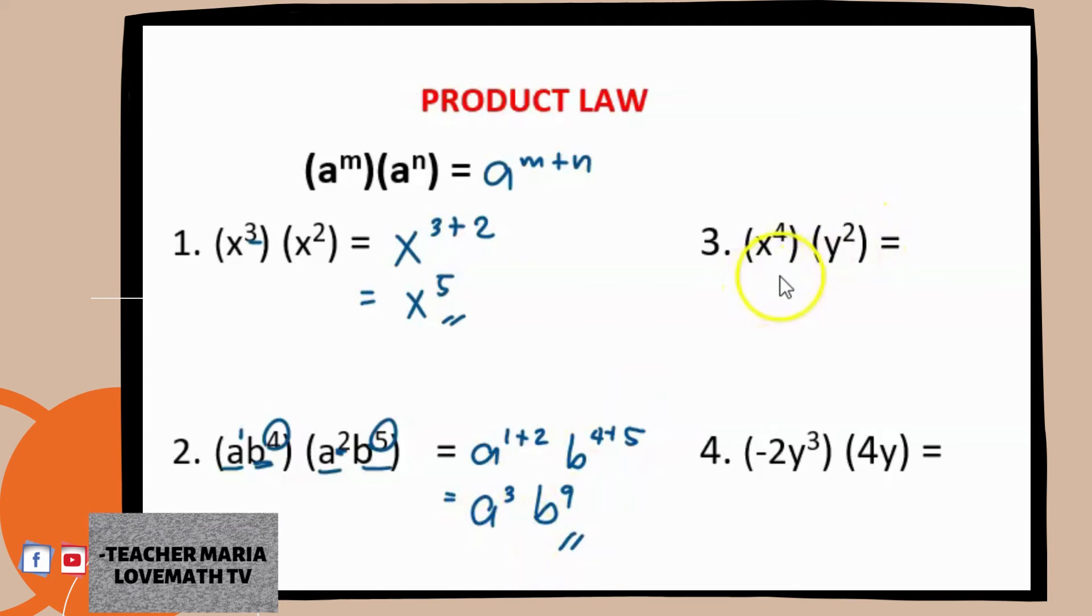Now how about this one, number 3? We have x raised to 4 multiplied by y raised to 2. As you can see, the bases of our factors are different. So we cannot add them. So we just have to copy. You will have here now x raised to 4, y raised to 2. This will be your final answer because you cannot combine them.